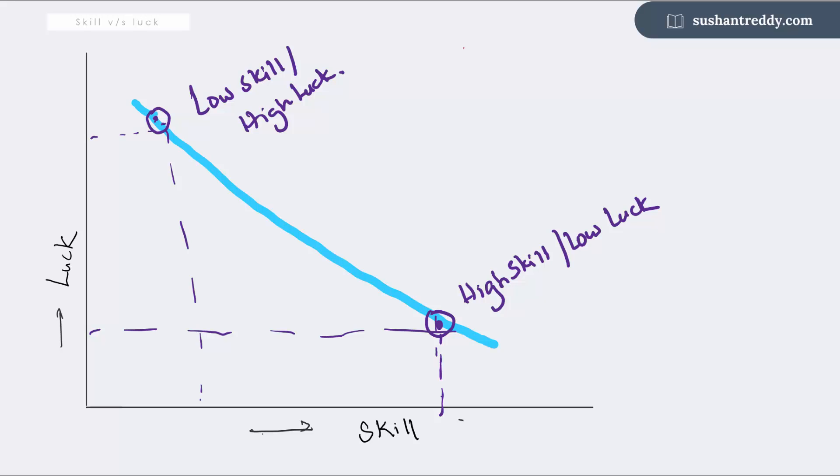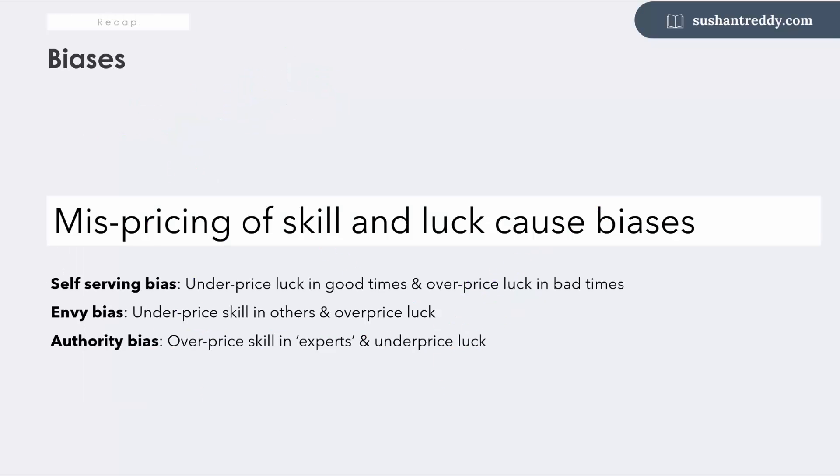We also discussed that there are various biases that happen due to a poor understanding of where we are on our skill luck curve and where others are on their skill luck curve. Mispricing our own skill and luck levels leads to self-serving bias, and mispricing other skill and luck levels lead to envy or authority bias.